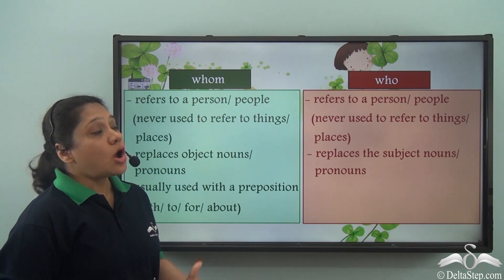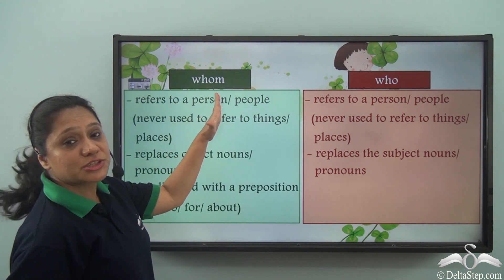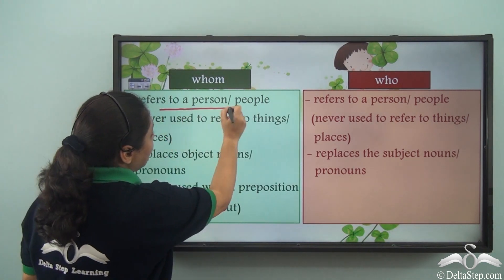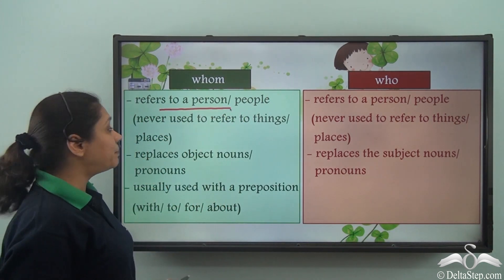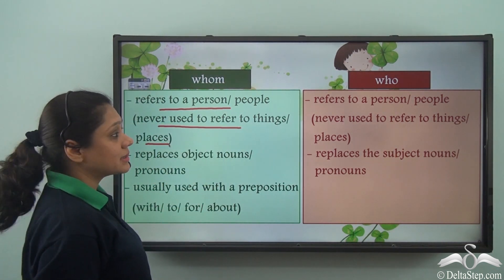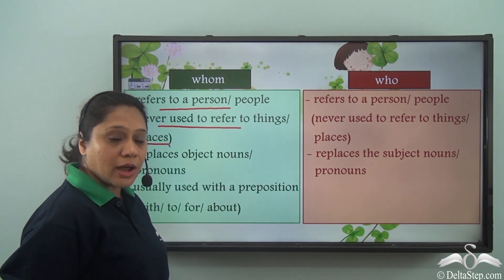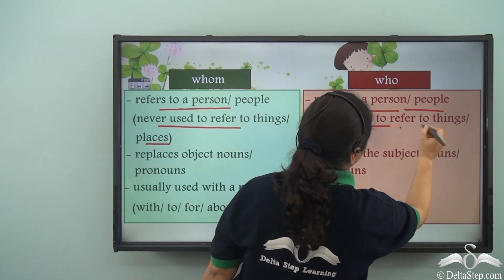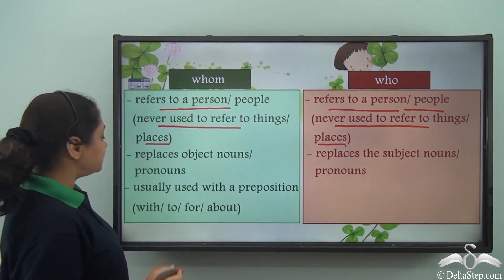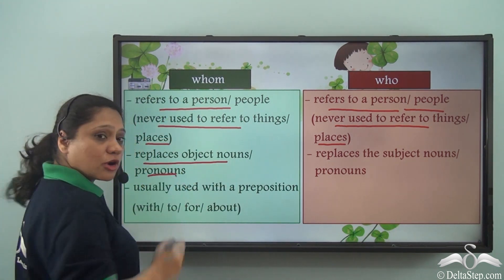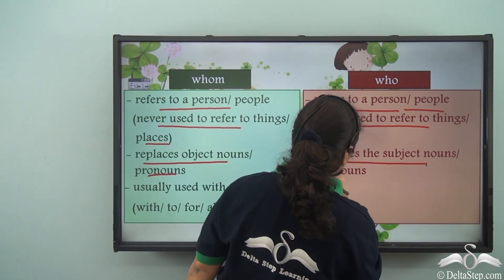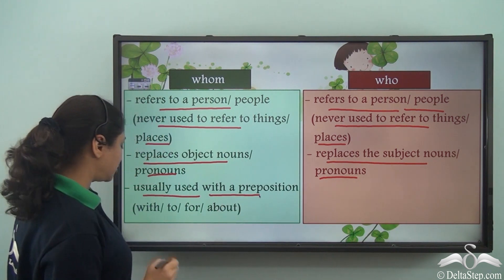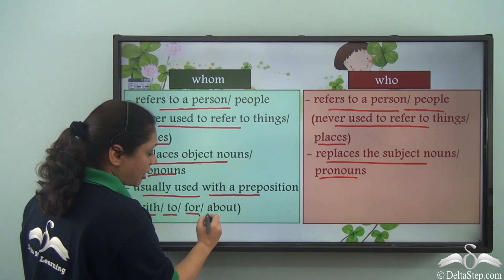So let us now see the difference and similarity between the relative pronouns 'who' and 'whom.' We use the relative pronoun 'who' when we want to refer to a person or to people; we never use it to refer to things or places. Similarly, we use the relative pronoun 'whom' when we want to refer to a person or people and we never use it to refer to things or places. 'Whom' replaces object nouns or pronouns whereas 'who' replaces subject nouns or pronouns. The relative pronoun 'whom' is usually used with a preposition like with, to, for, or about.